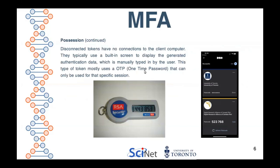There are disconnected tokens that have no connection to the client computer accessing the system or website. They typically use a built-in screen to display generated authentication data, which is manually typed by the user. This type of token uses an OTP — a one-time password — that can be used only for that specific session. As the name says, it can be used only once, and these OTPs also have a very short life — usually 60 seconds. So if a hacker gets access to this OTP, they won't be able to do much unless they act within that time frame.